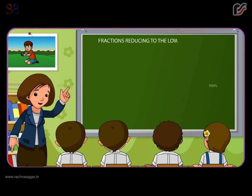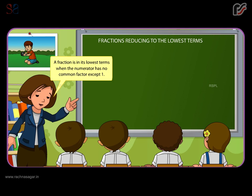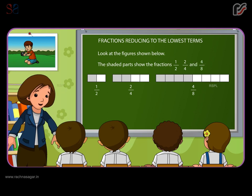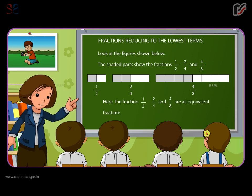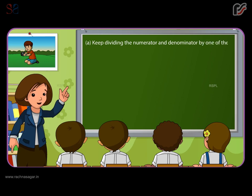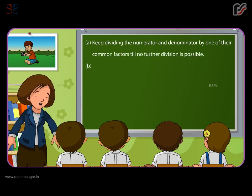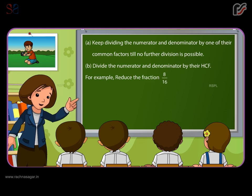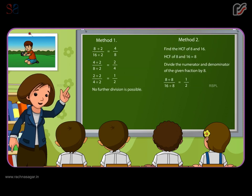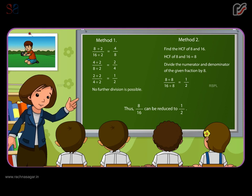Fractions reducing to the lowest terms. A fraction is in its lowest terms when the numerator has no common factor with the denominator except one. The shaded parts show the fractions one by two, two by four, and four by eight, which are all equivalent fractions. But one by two is in its lowest terms. Keep dividing the numerator and denominator by one of their common factors until no further division is possible, or divide by their HCF. For example, reduce the fraction eight by sixteen to its lowest term. Eight by sixteen can be reduced to one by two.